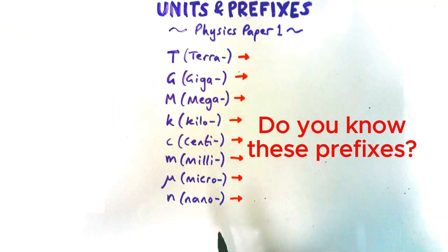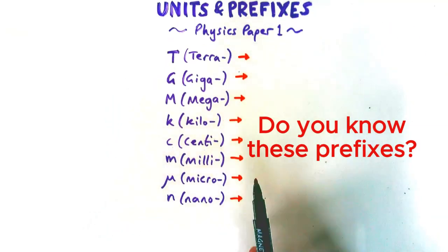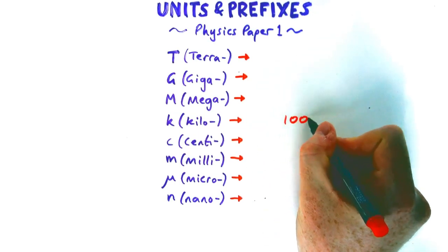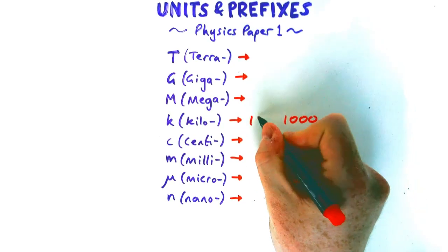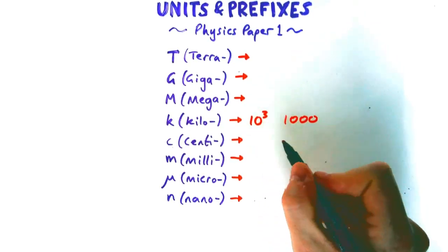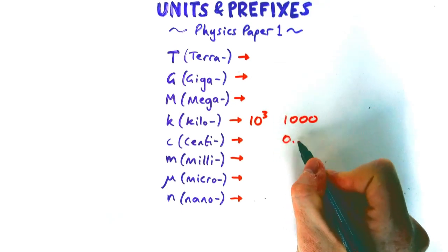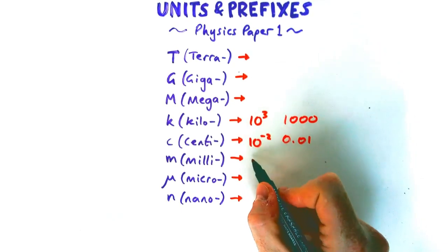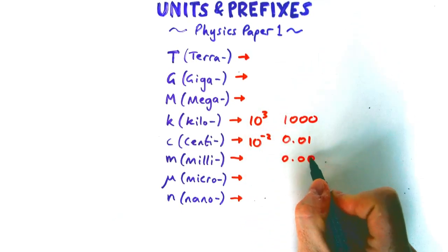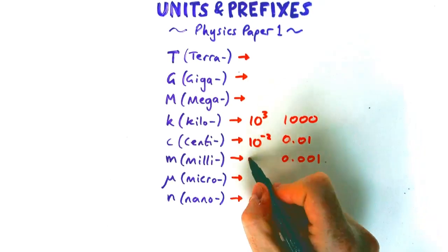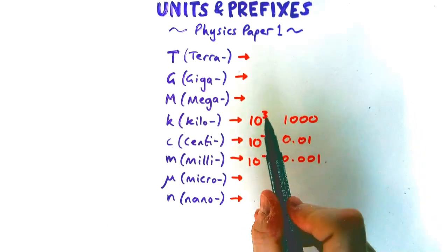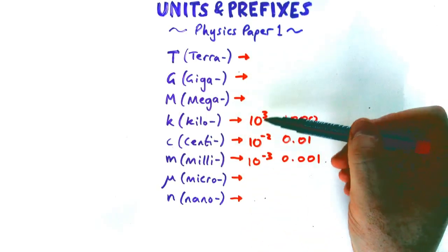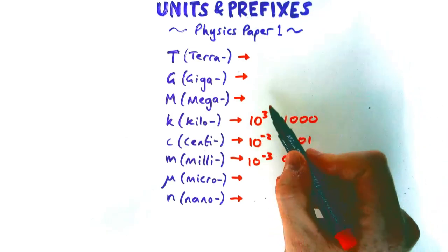Do you know your prefixes for the physics paper 1 exam? Most people will know that kilo is a thousand, or ten to the power of three — like a kilometer. Lots of people know that centi is a hundredth, or ten to the power of minus two. And milli is a thousandth, or ten to the power of minus three. However, you need to know all of them.